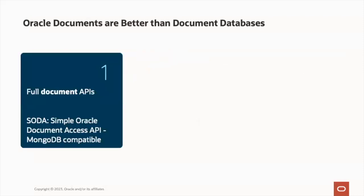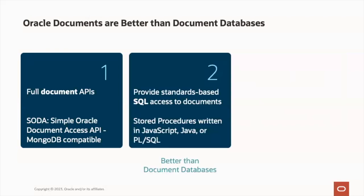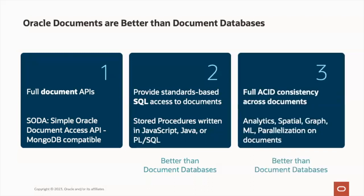The Oracle database comes with a rich set of APIs to support native JSON-based applications, including SODA or Simple Oracle Document Access for accessing and operating upon collections of data using QBE or query by example and filter operations, as well as a MongoDB API for applications developed to use MongoDB commands. The Oracle database also provides standard DML, or data manipulation language, access to documents via SQL, including stored procedures. It also provides full ACID consistency across documents, meaning that JSON documents can be exposed to other Oracle features like analytics, spatial, graph, machine learning, and parallelization on documents, all in real time.